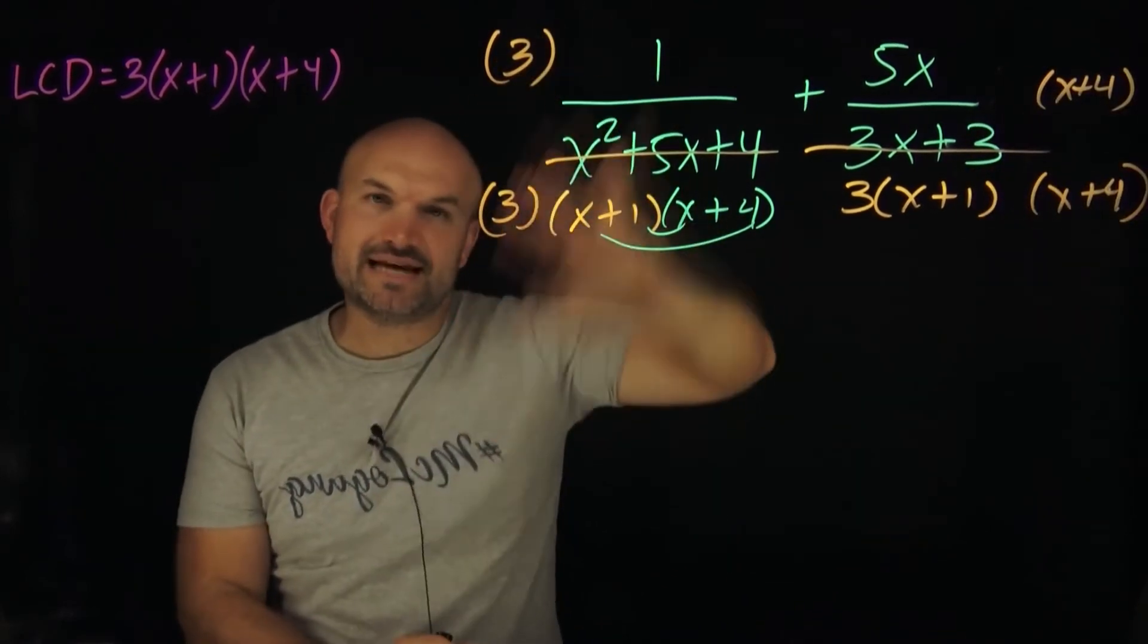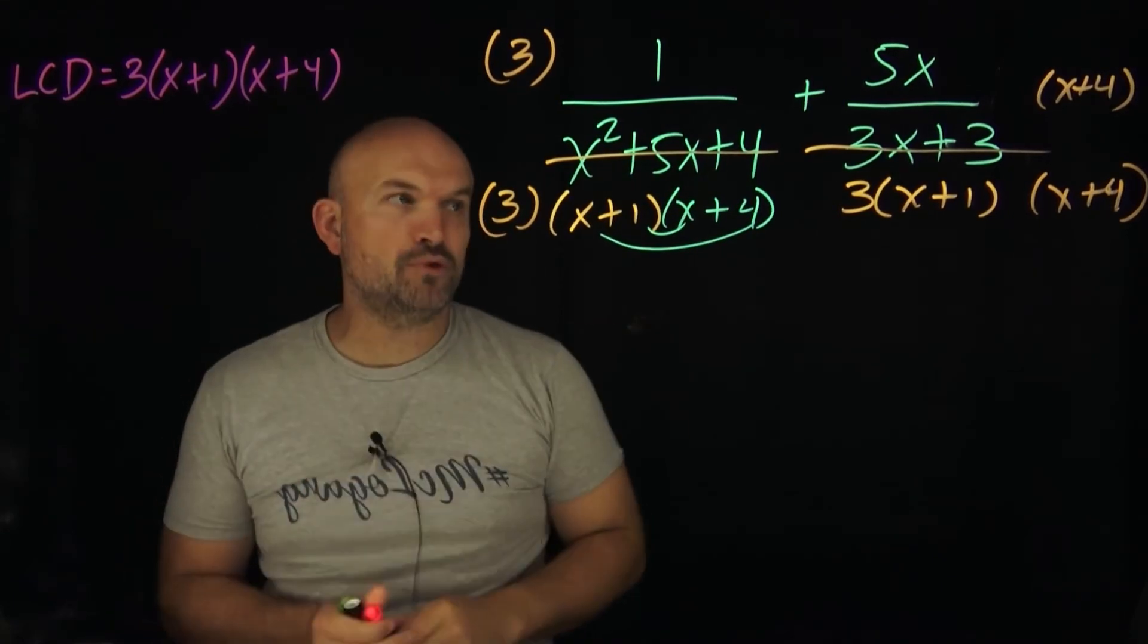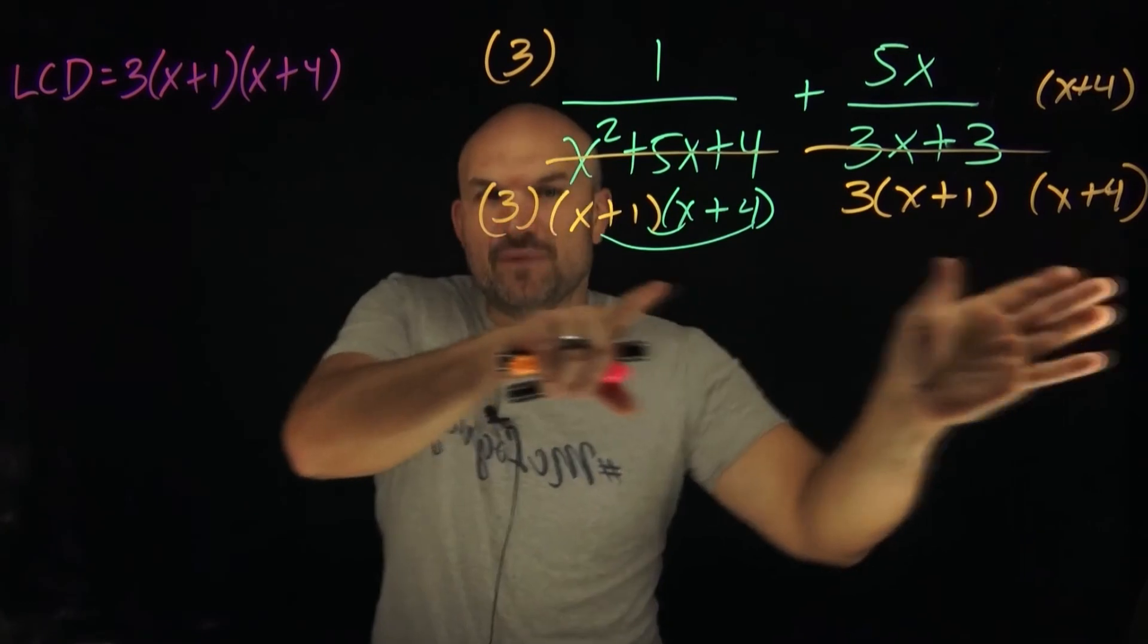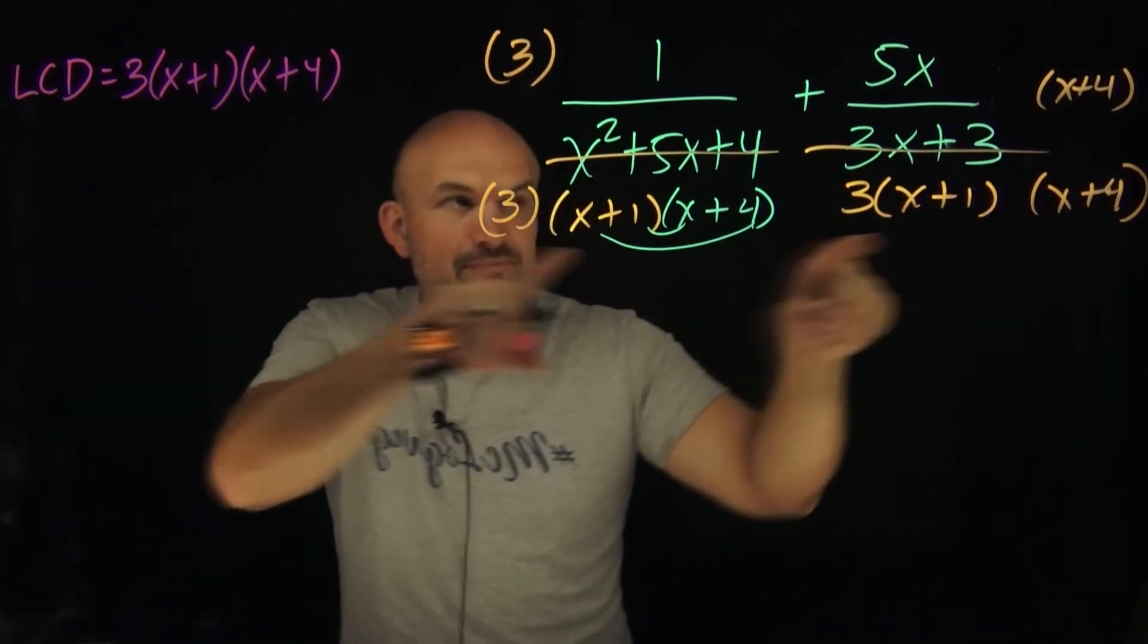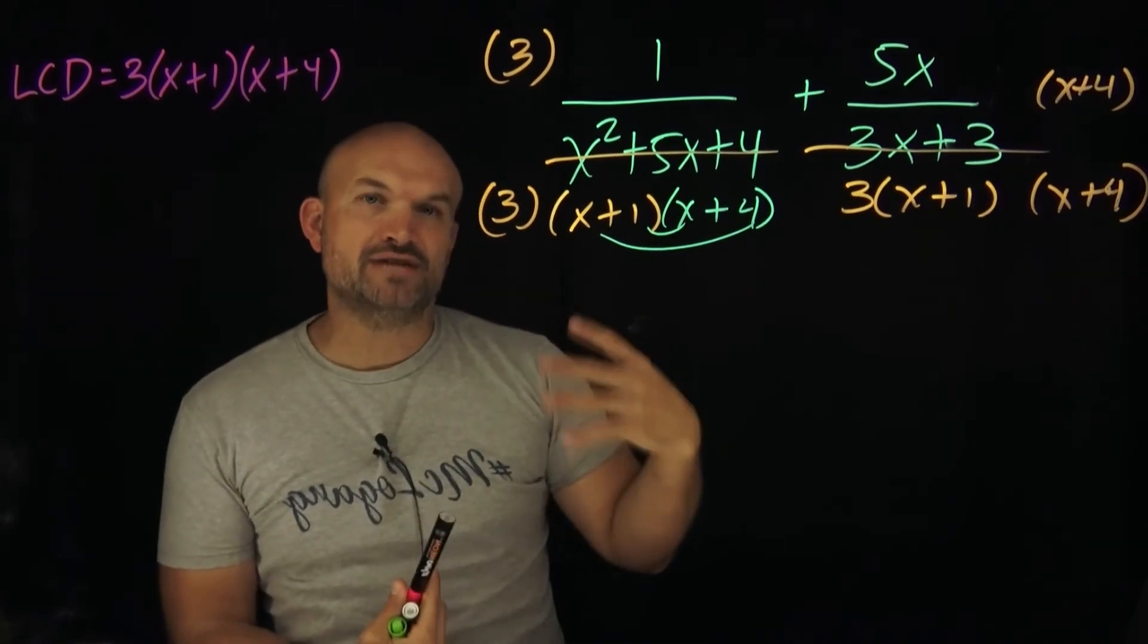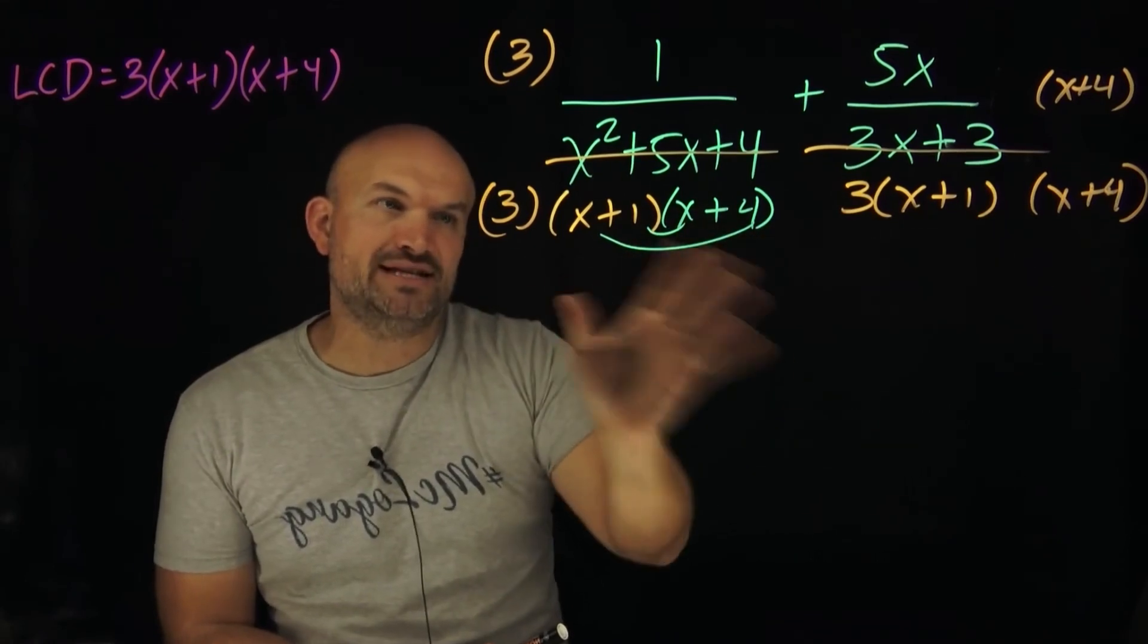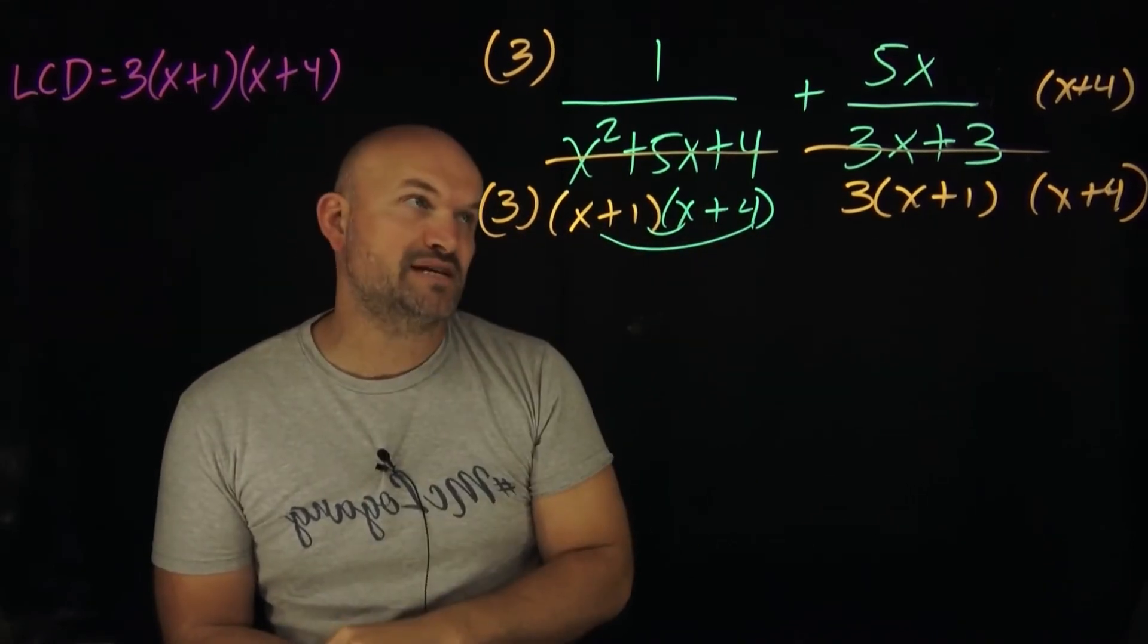Remember, the reason why I'm doing this on the top and bottom is to produce what we call equivalent fractions. That's going to be so important. And by multiplying those values, I have the LCD in both these fractions. So now when I rewrite my simplified expression, I can simply rewrite it as one expression, adding my two numerators under the same LCD, which is 3(x+1)(x+4).